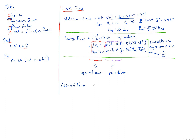Apparent power is something that is measured not in watts, but in volt-amps. So volt-amps is the unit for apparent power.